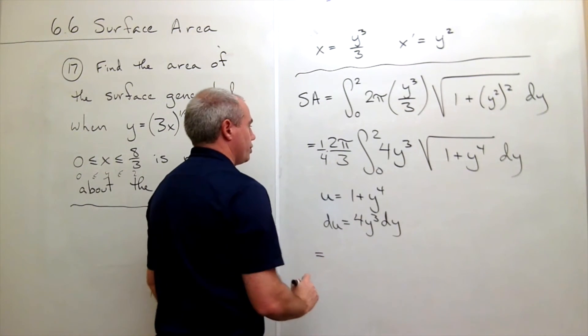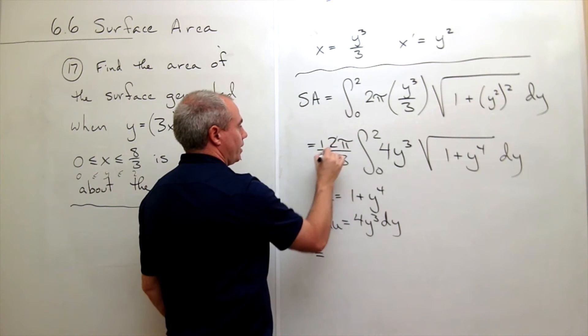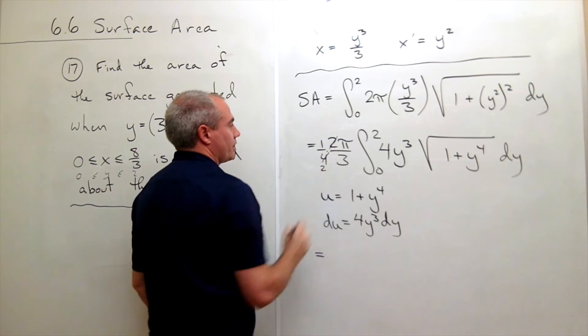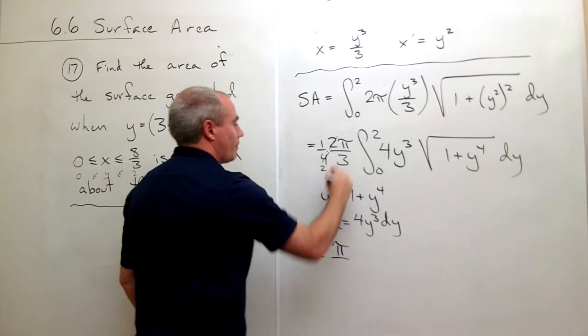Now I can make my substitution, and on the outside here we could simplify a little bit, cancel a 2 and a 4 and get a 2. So on the top I have a π, on the bottom I have a 6. So π over 6 times integral.